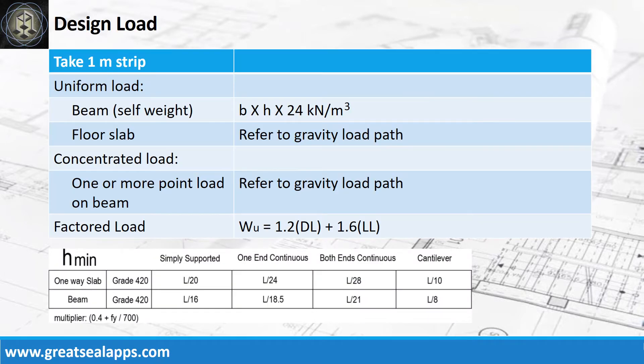Get the design factored load of beam from uniform load and concentrated load. Uniform loads consist of beam self-weight and load from floor slabs, while concentrated loads can be evaluated through beam analysis. Check beam depth for deflection control per ACI code.